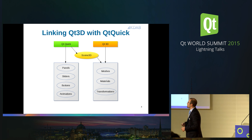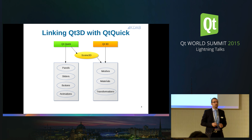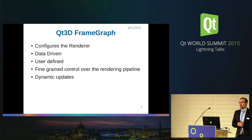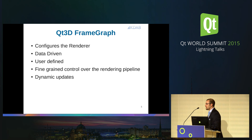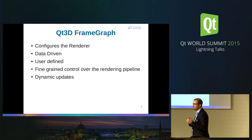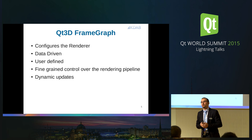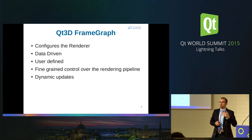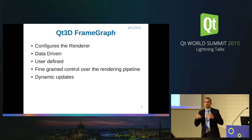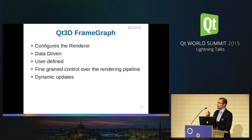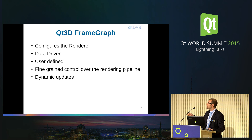Scene3D is the link between Qt Quick and Qt 3D. The frame graph is another tree in a Qt 3D scene that allows us to configure the renderer — to configure when we want the OpenGL renderer to clear the buffers, what size our viewport is. We can use the frame graph to build up a custom tree that we then use in our demo.